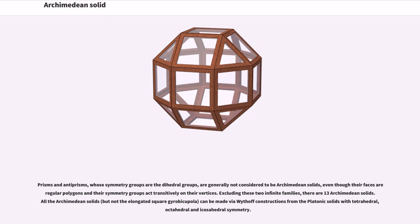Prisms and antiprisms, whose symmetry groups are the dihedral groups, are generally not considered to be Archimedean solids, even though their faces are regular polygons and their symmetry groups act transitively on their vertices. Excluding these two infinite families, there are thirteen Archimedean solids.